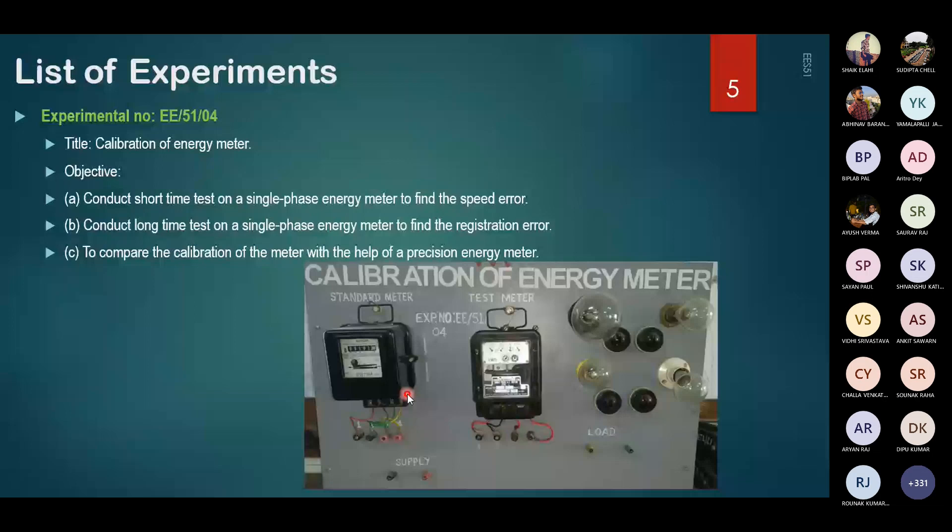And that gives us a measurement of the time, because here the wattage for a certain period could be multiplied and we will get the energy. So to compare the calibration of the meter with the help of a precision energy meter, that would be our purpose.